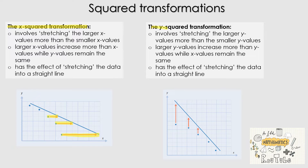A Y squared transformation involves stretching the larger Y values more than the smaller Y values. So now instead of moving to the right, the Y values are being stretched up. If those dots were to move up, it's going to stretch the data into a straight line. The larger Y values increase more than the smaller Y values, so the X values remain the same. In a Y squared transformation, the data values aren't moving left and right — they're just moving up, and that's going to linearise our data.